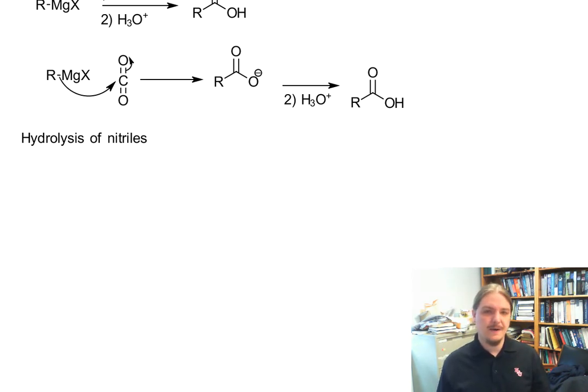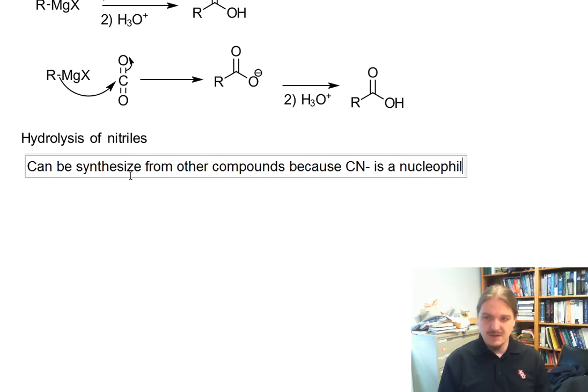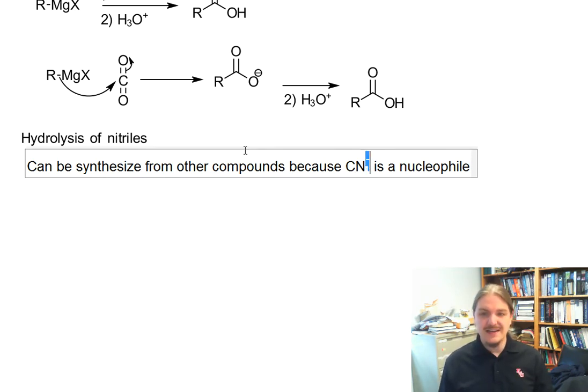worth particular note because nitriles can be synthesized from a variety of other compounds because the cyanide anion is a nucleophile. So most of the other carboxylic acid derivatives are synthesized from carboxylic acid.